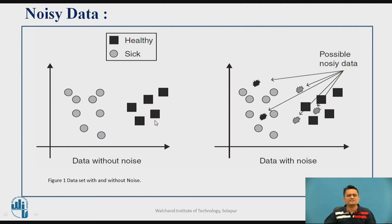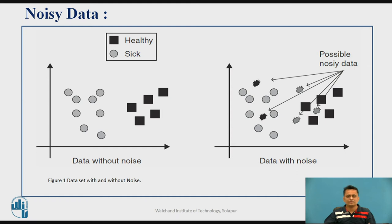The next problem is noisy data. Noise is essentially an unwanted signal. Consider a scatter plot for two attributes where some instances represent a sick condition and others a healthy condition — without noise, it is easy to classify them. But if noisy data points are present that represent neither the healthy nor the sick condition, classification becomes much more difficult. A filtering approach can solve this: filters are algorithms capable of removing these noisy data points.